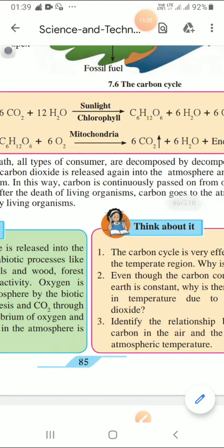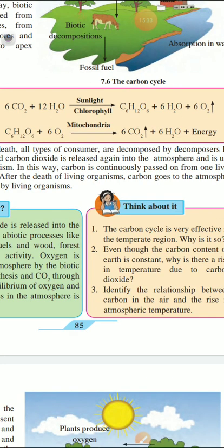Two chemical equations are given here. The first is for photosynthesis: 6CO₂ + 12H₂O, in the presence of sunlight and chlorophyll, forms C₆H₁₂O₆ (glucose) + 6H₂O + 6O₂, with the gas going upward. The second is for respiration: C₆H₁₂O₆ + 6O₂ in the mitochondria forms 6CO₂ (gas going upward) + 6H₂O + energy. Eventually, after death, all consumers are decomposed by decomposers, which release carbon dioxide into the atmosphere for use by living organisms, completing the carbon cycle.